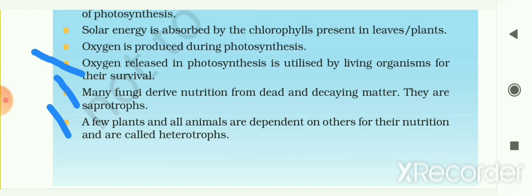We also studied rhizobium bacteria. Pulses such as groundnut, peas, beans, and moong are plants of the legume family. Rhizobium bacteria inhabit their roots and can take atmospheric nitrogen and convert it into a soluble form, thus providing nitrogen to the leguminous plants. In return, leguminous plants provide food and shelter to the rhizobium bacteria. The relationship between leguminous plants and rhizobium bacteria is also called a symbiotic relationship and is of great significance for farmers.